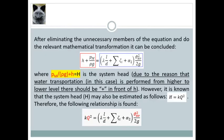After eliminating the unnecessary members of the equation and do the relevant mathematical transformation, the following equation that you see below is obtained, where Pm divided by the multiplication of rho and G plus H, the small one, is the system head, due to the reason that water transportation in this case is performed from higher to lower level. There should be plus H. There should be plus in front of H. This is something important that should be taken into account.